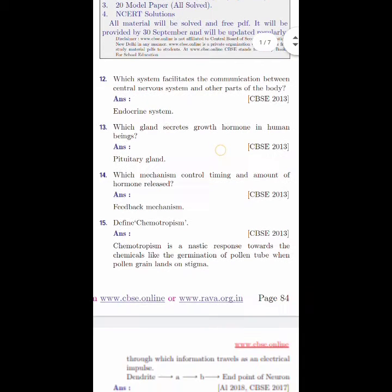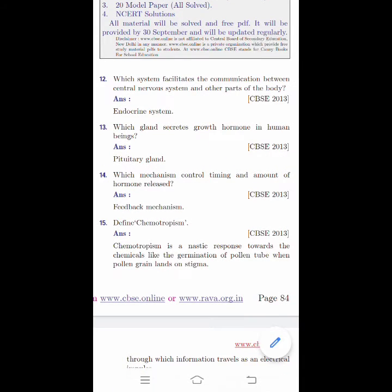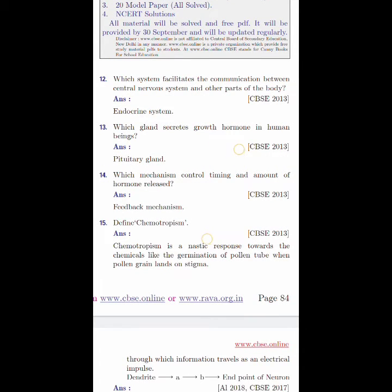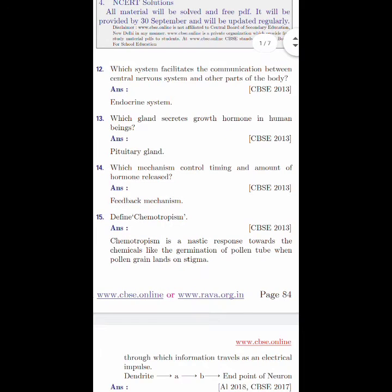Which system facilitates the communication between the central nervous system and the other parts of the body? That is endocrine system. Which gland secretes growth hormone in case of human beings? That is pituitary gland, both in case of male as well as female. Which mechanism controls timing and amount of hormone release? That is feedback mechanism.